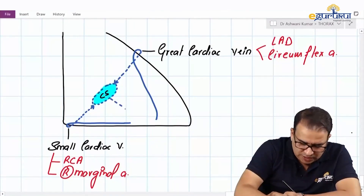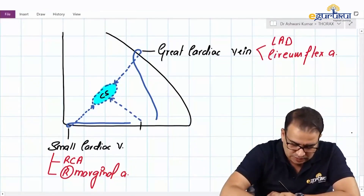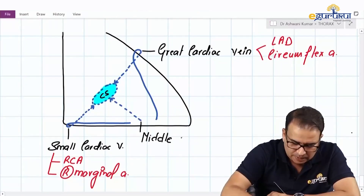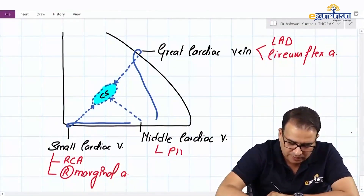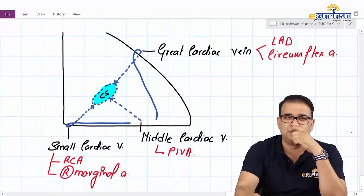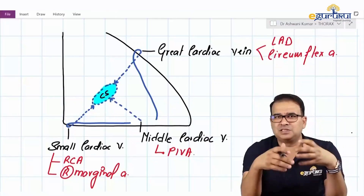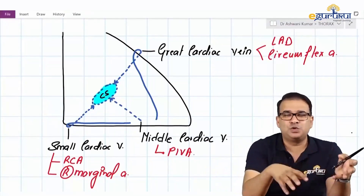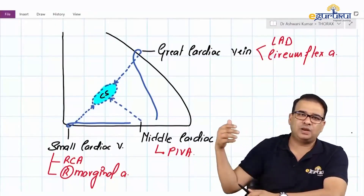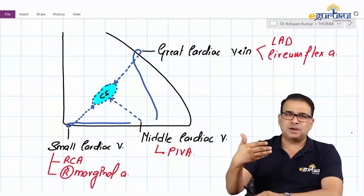Then we have a vein draining into the coronary sinus that is present on the posterior side between the two ventricles — this is the middle cardiac vein. The middle cardiac vein is accompanied by the posterior interventricular artery. Clinically, this is tested by giving the name of the artery and asking which vein accompanies it, or vice versa. So it's very important to understand artery and vein together, and it's easiest when viewed from the same anterior aspect used for the arteries.